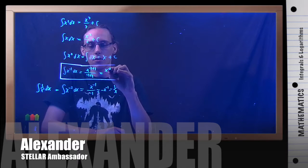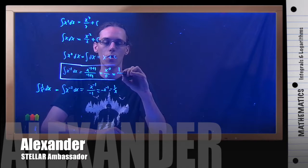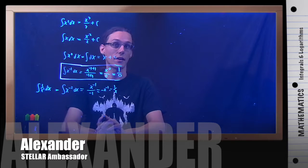Well, negative 1 plus 1, that's 0, which is x to the 0. And negative 1 plus 0, that's 0. So x to the 0 is 1 over, you can't divide by 0.